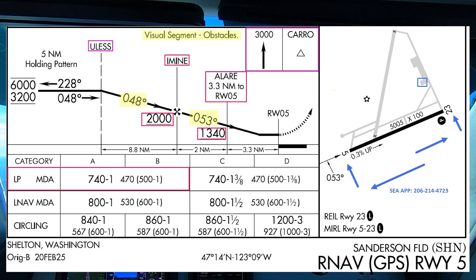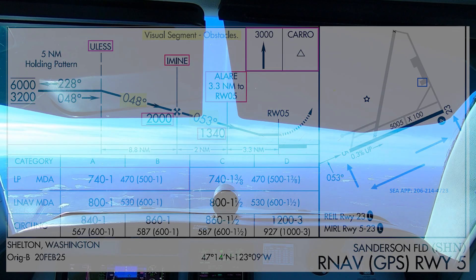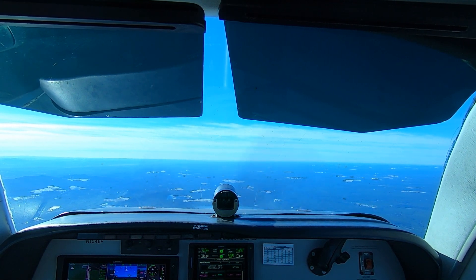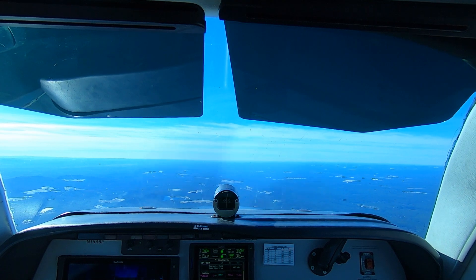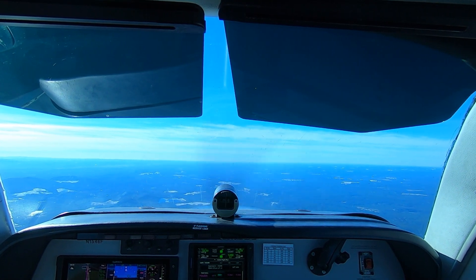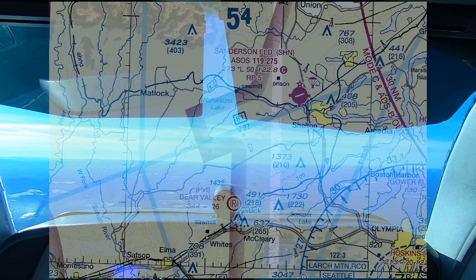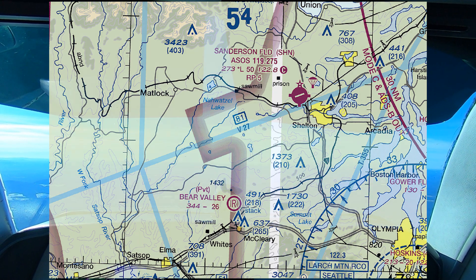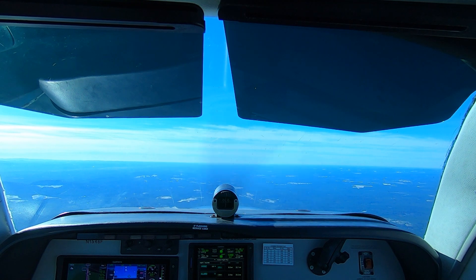We're not planning to go missed today, but if we did, it would be a straight-out climb out to CAIRO to hold. The minimums are raised 20 feet for the circle to land, but that won't affect us today. This is LP minimums because of some terrain out here to the west-southwest of the airport, and this little dogleg is one of the other gotchas on this approach. At IMINI we make a slight course change.